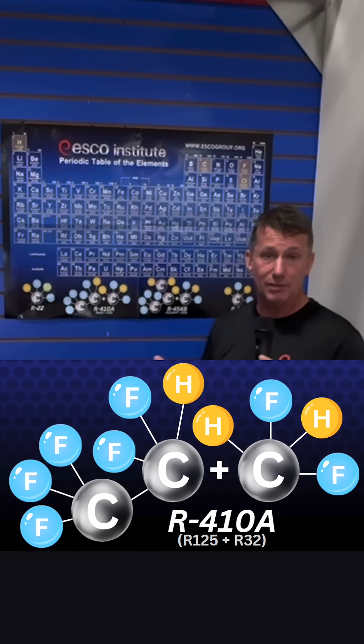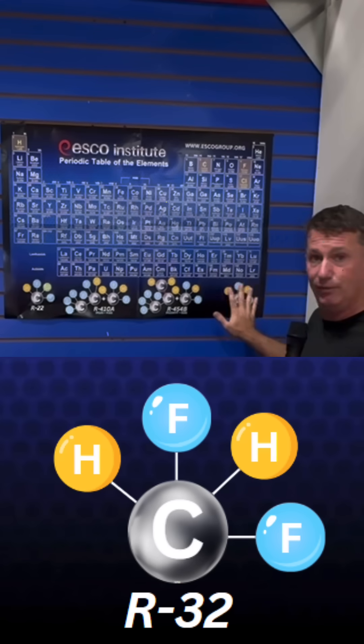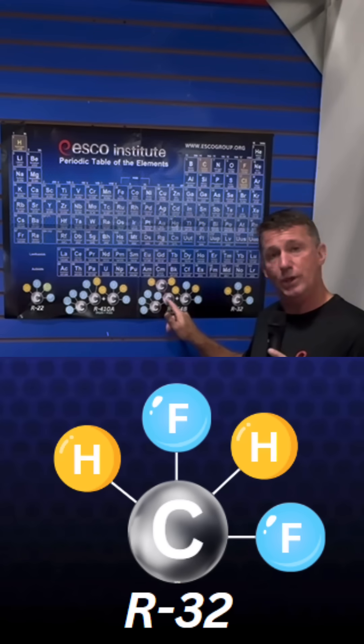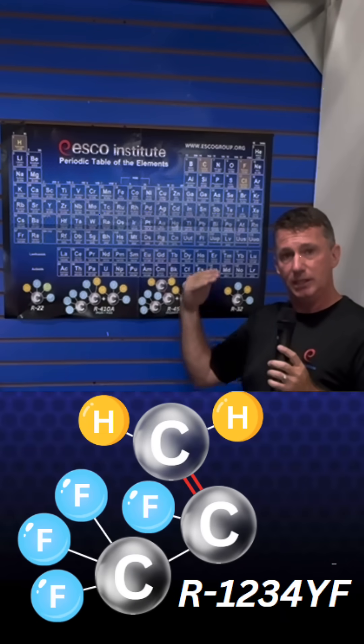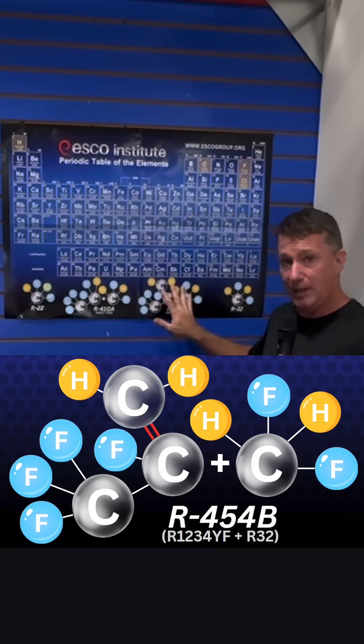When we move into our new generation of refrigerants, we're going to see both R32 in its single constituent form, but then we're going to blend it with R1234YF. It brings the global warming potential down, but it is still a mildly flammable refrigerant.